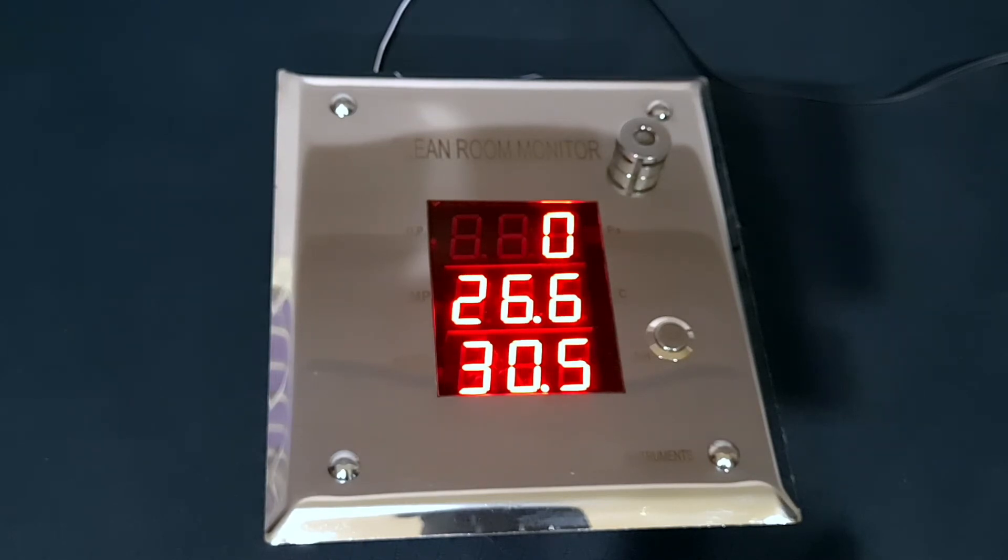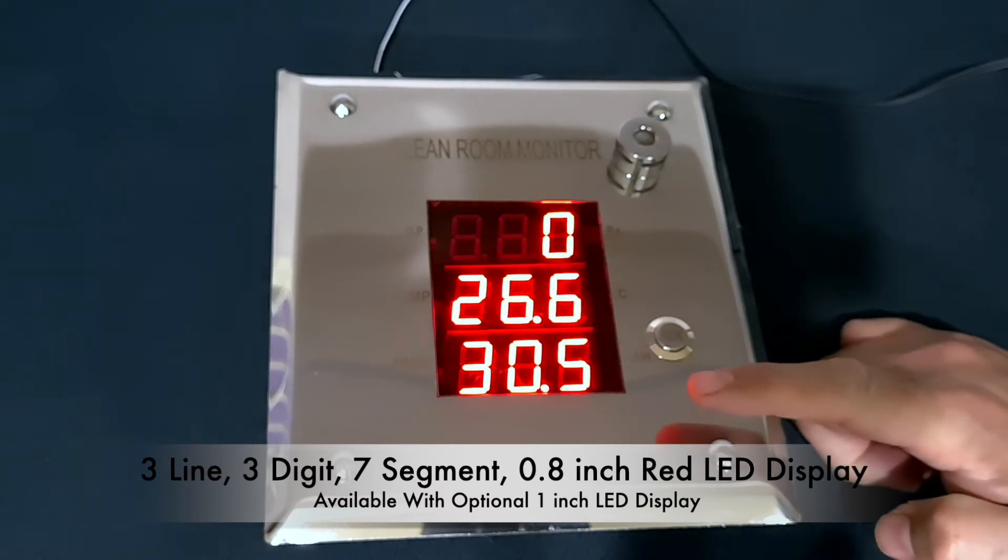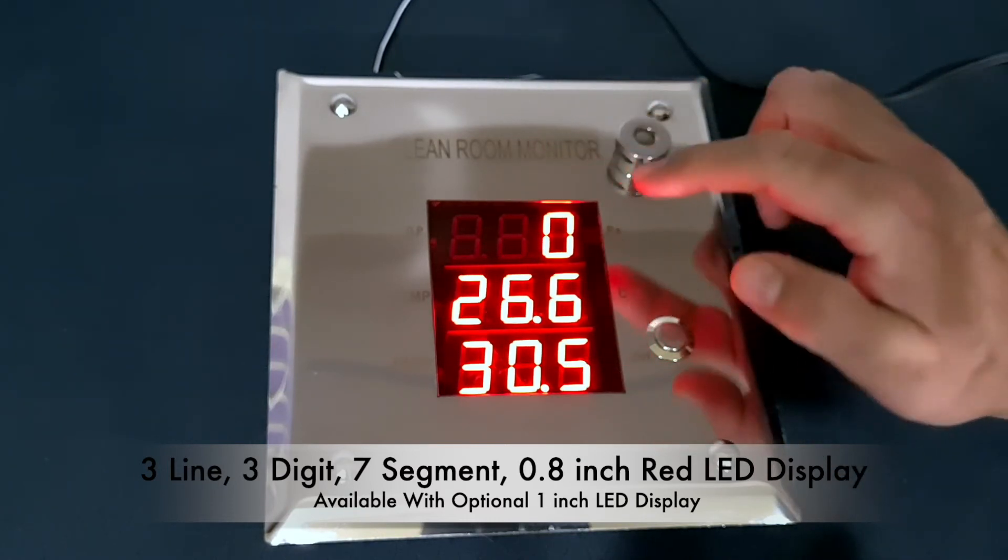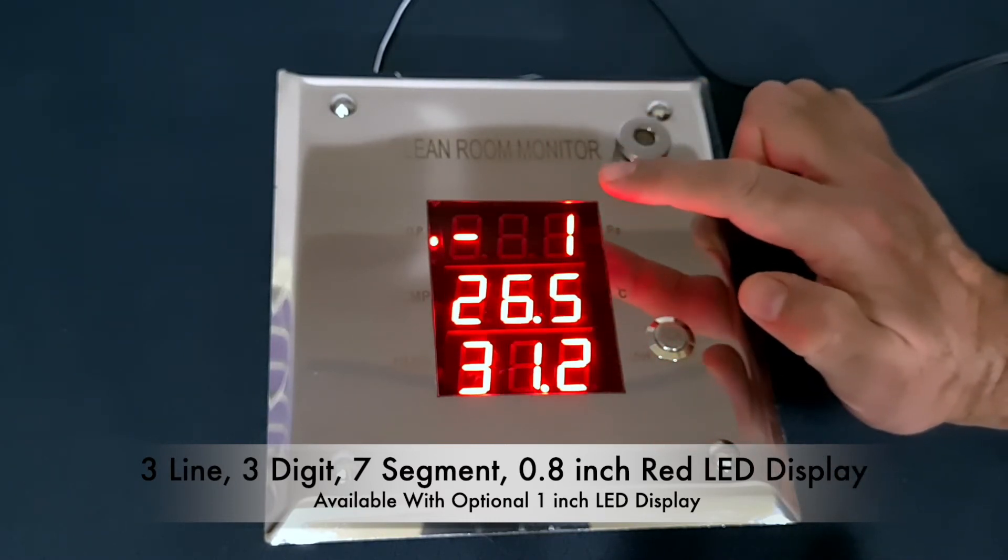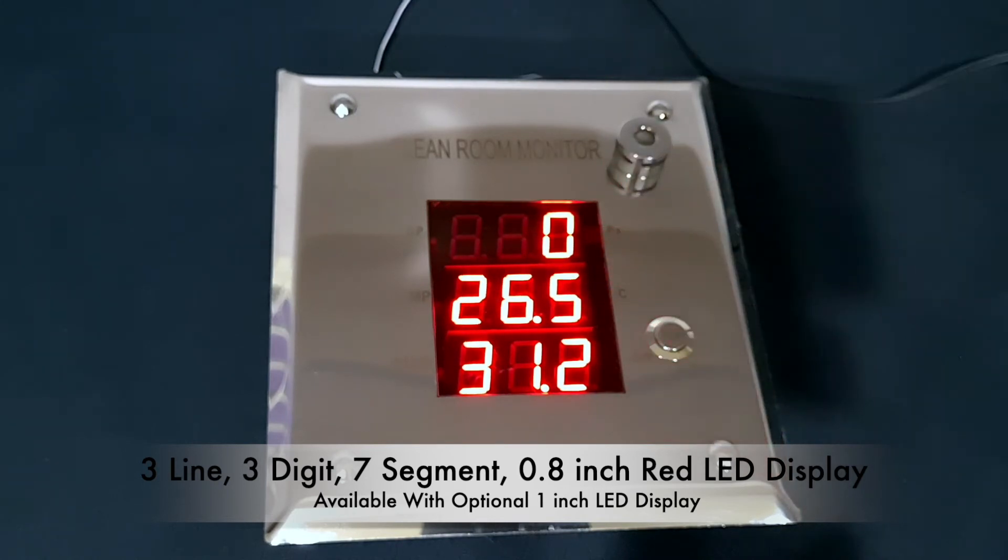The keypad is inside the instrument to avoid misuse on the field by operators. It has a three-line, three-digit, seven-segment red LED display of 0.8 inch height and is also available as an option with one inch high displays.